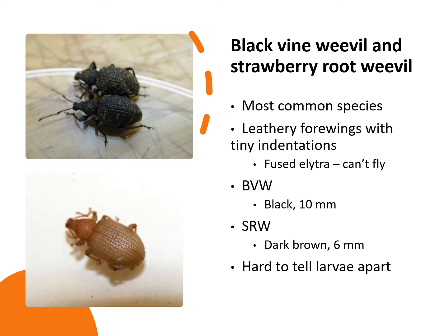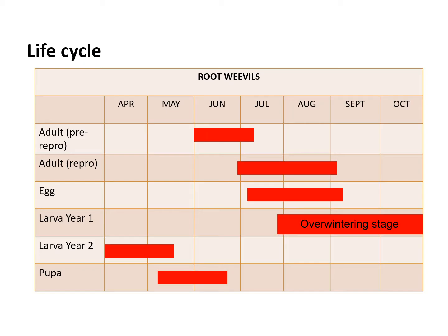The two most common weevils that feed on strawberries are the black vine weevil and the strawberry root weevil. Black vine weevil larvae are a bit bigger and cause more damage than the strawberry root weevil. Most root weevils overwinter as larvae in the soil, and root feeding resumes in the spring as soil temperatures become warmer. Feeding occurs usually within the top 2 to 40 centimeters of the soil. Towards the end of May, larvae will pupate. Adult weevils emerge early to mid-June and, since they cannot fly, they crawl up the host plant to begin feeding. They are strictly night feeders and hide in leaf litter or on stems during the day.